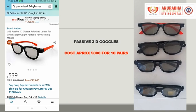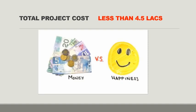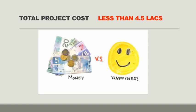The last part you need is the goggles. These are passive 3D goggles, available on Amazon, quite cheap, and you can buy them in multiples. The total cost of all these things will be less than ₹4.5 lakhs, and if you are a good negotiator, you can get them at an even lower price.